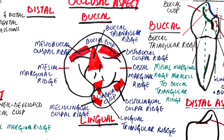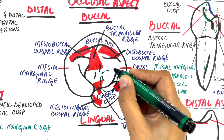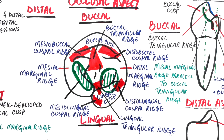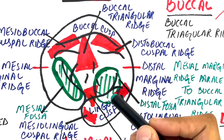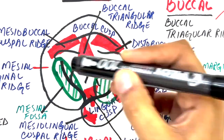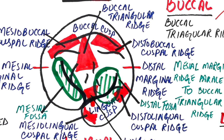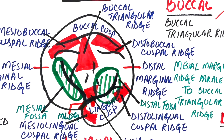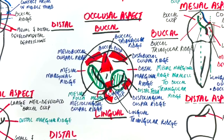Two fossae are also present: the distal fossa and the mesial fossa, which unlike other teeth are not triangular in shape. The distal fossa is circular in shape, while the mesial fossa is much more linear in shape. Two grooves are present on the occlusal surface: the mesial developmental groove and the distal developmental groove, located on the mesial and distal fossae respectively. The mesial developmental groove extends and joins the mesiolingual developmental groove on the lingual surface of the tooth. A few supplementary grooves may also be present.